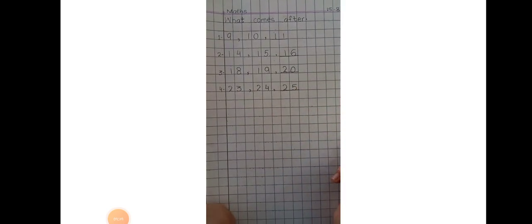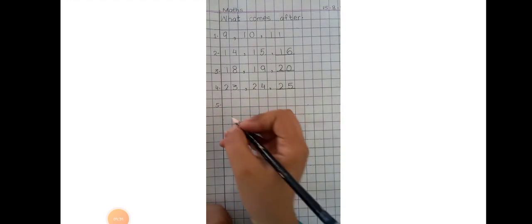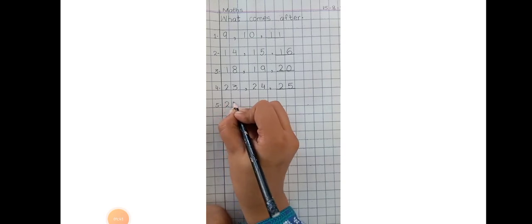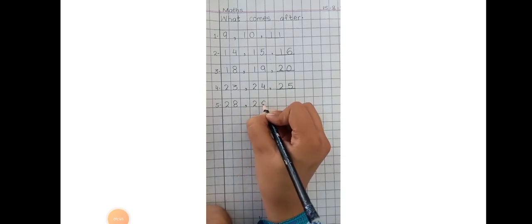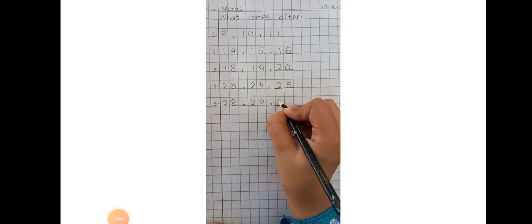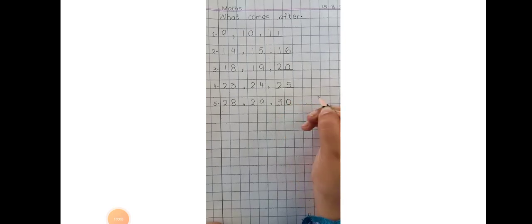Now leave one line and write down number 5. Write down 28, comma, 29, comma, dash. What comes after 29? Good boys, answer me. What comes after 29? Yes, 30.